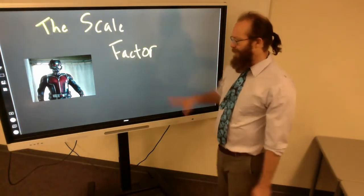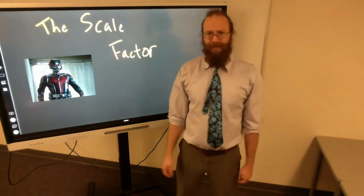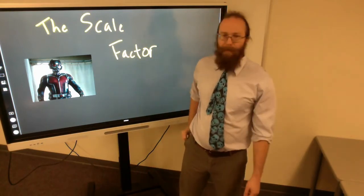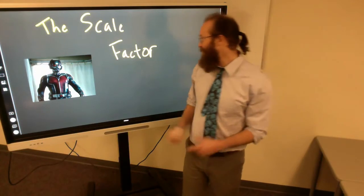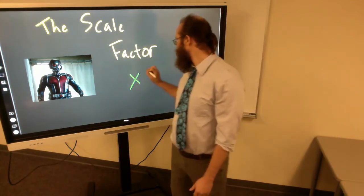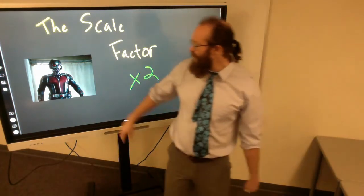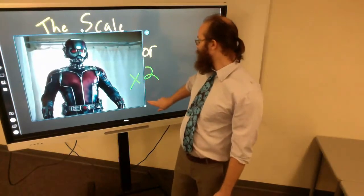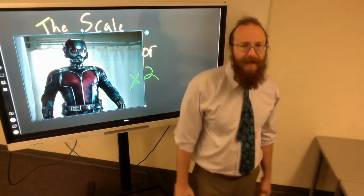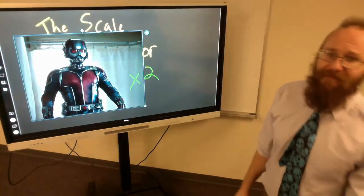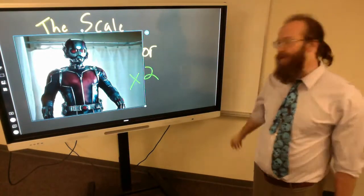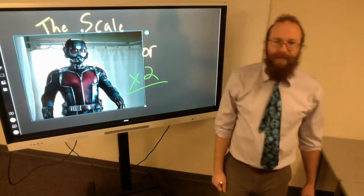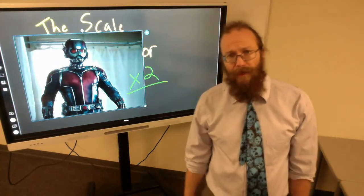So if we have Ant-Man and he's normal size, I can multiply him by what is called a scale factor. So let's say we want to multiply Ant-Man by two. He is going to get twice as big, right? So his head is going to get twice as big, his body is going to get twice as big, his arms, every single part of Ant-Man is going to get twice as big. Our scale factor in this case would be times two.